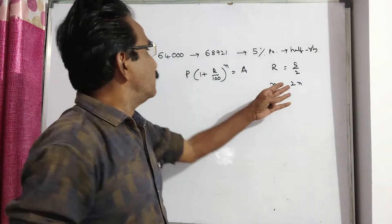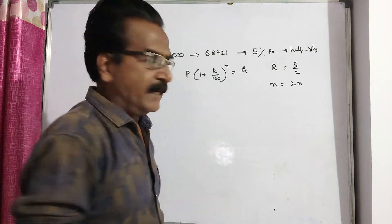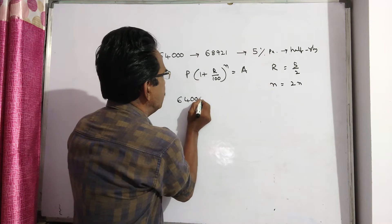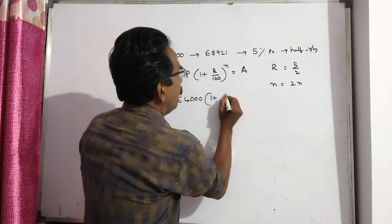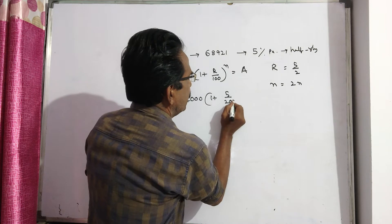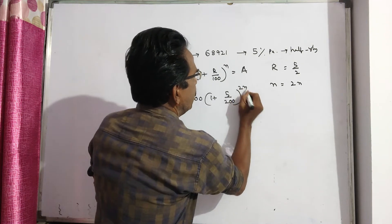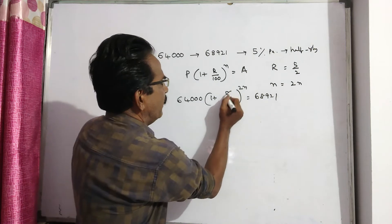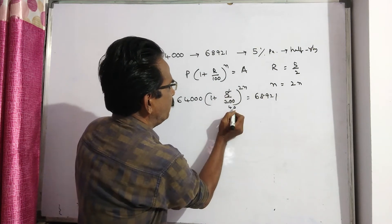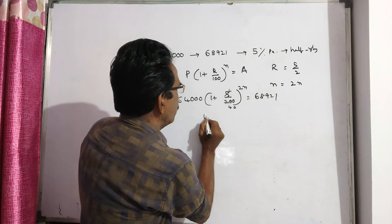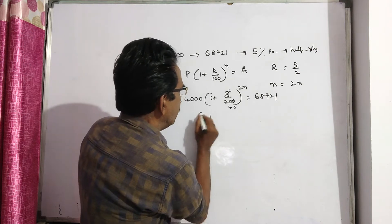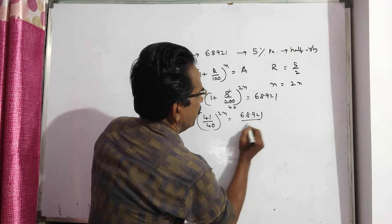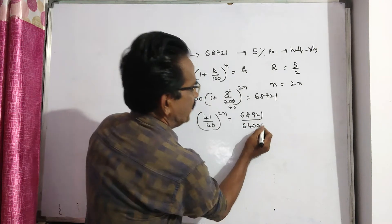Now let us substitute these values in the formula. P = 64,000, so: 64,000 × (1 + 5/200)^2n = 68,921. This simplifies to (1 + 1/40)^2n = 68,921/64,000, that is (41/40)^2n = 68,921/64,000.